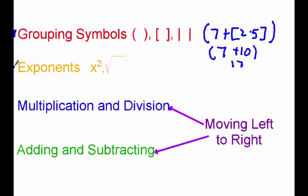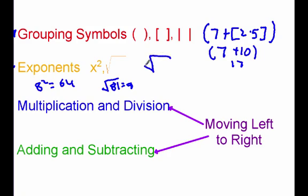After grouping symbols comes exponents. Exponents are things like x squared or the square root of a number. For example, 8 squared is 8 times 8, which is 64. Or the square root of 81 is 9. Now, one thing to note is the square root can also be a grouping symbol. For example, if I have the square root of 5 plus 4, before I can take the square root, I want to add 5 and 4, and I get the square root of 9, which is 3. So the radical symbol — the square root symbol — is kind of both a grouping symbol and an exponent. We have to do what's inside of it first, and then take the square root.